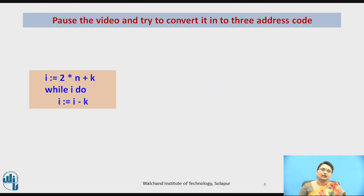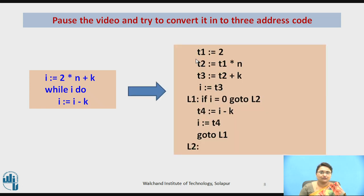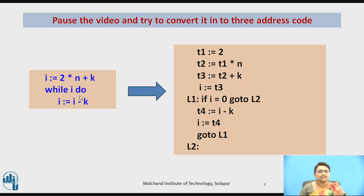Consider the statement: I assigns to 2 * n + k, followed by while I do I assigns to I minus k. The first assignment generates four three-address code statements: t1 = 2, t2 = t1 * n, t3 = t2 + k, then I = t3. The while loop then generates labels label1 and label2 using the newtemp/newlabel function, producing the corresponding three-address code.